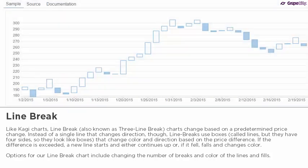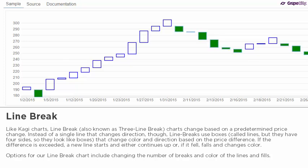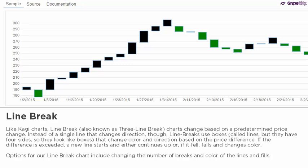Like Kagi charts, line break — also known as three-line break charts — change based on a predetermined price change instead of a single line that changes direction. Though line breaks use boxes called lines, they change color and direction based on the price difference. If the difference is exceeded, a new line starts and either continues up, or if it fell, falls and changes color. Options for the line break chart include changing the number of breaks and color of lines and fills.